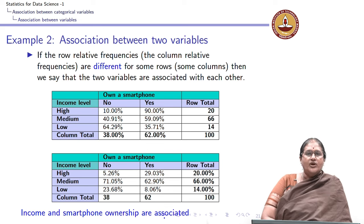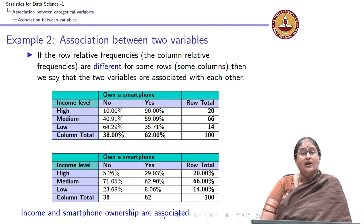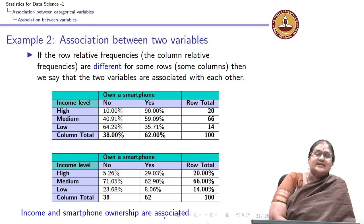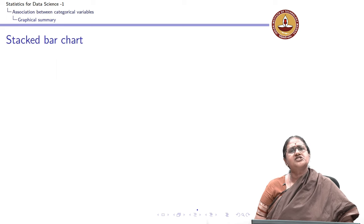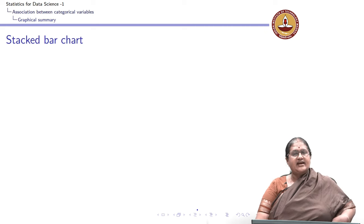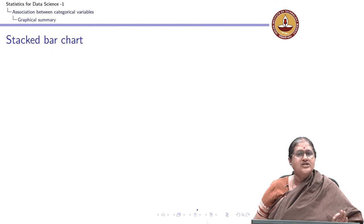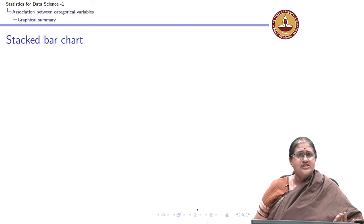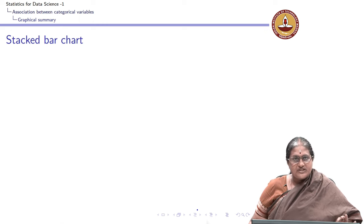Since the row and column frequencies are different among the rows and columns, income and smartphone ownership are associated with each other — which is very intuitive. You would expect phone ownership to be associated with income level, whereas ownership need not be associated with gender, and both examples have demonstrated this. We have seen how to use relative frequency to decide whether two variables are associated or not.